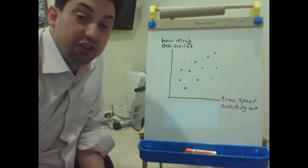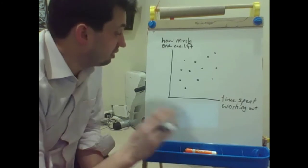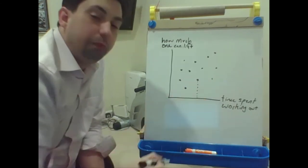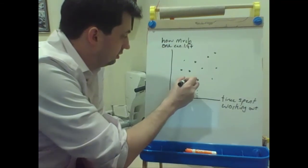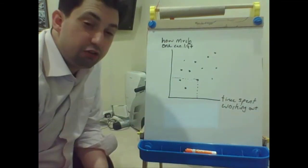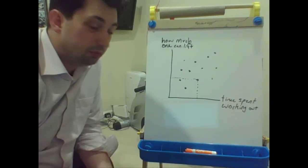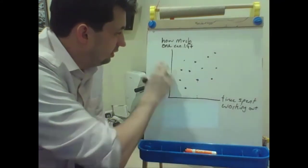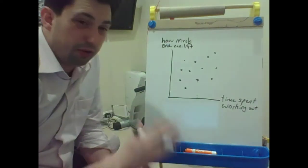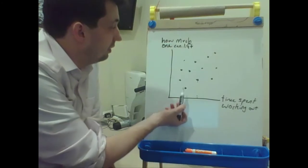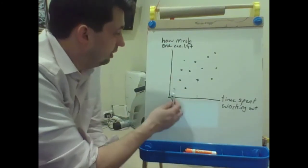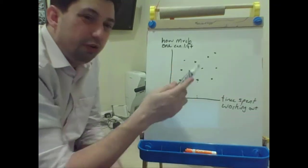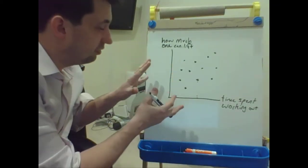Each one of these dots represents an element in our data set. In this particular case, each dot represents a person who has spent a certain amount of time working out and can bench press a certain amount of pounds. We can see from this scatter plot that these two things kind of run together — it's noisy. There are some people who spend very little time working out and can bench press a lot, and some who work out a fair amount but still can't bench press that much. But generally, these variables seem to run together.